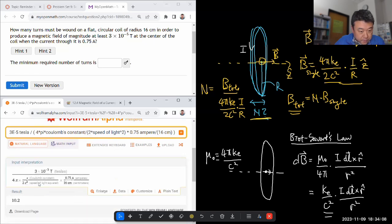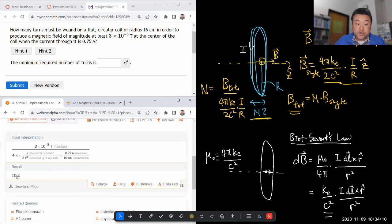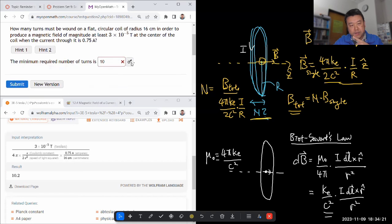And here, I think if I put in 10, it'll tell me I'm wrong, because you have to read the question carefully. It keeps saying at least, minimum, and the answer, the real number is 10.2. So if I have 10 turns, my magnetic field is at least going to be this. So I need 11 turns to have magnetic field that's greater than this.